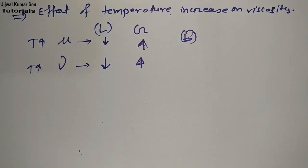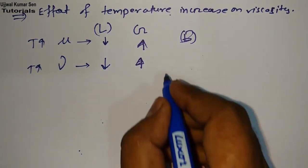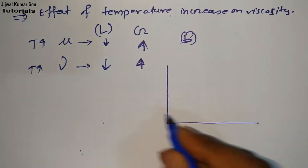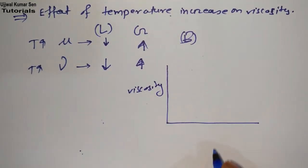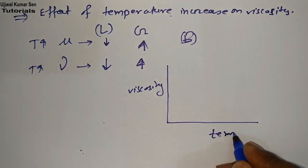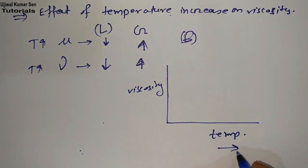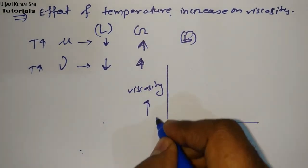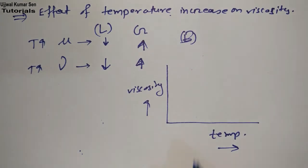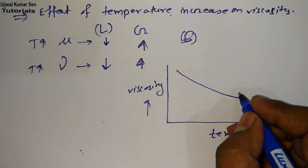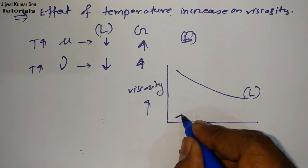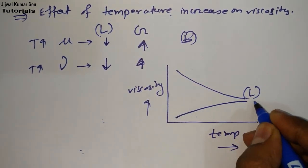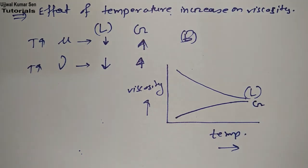Let's understand this with a graph. We are drawing a graph of viscosity versus temperature — on this side temperature increases, on this side viscosity increases. In case of liquid, as temperature increases, viscosity decreases. In case of gas, as temperature increases, viscosity increases.